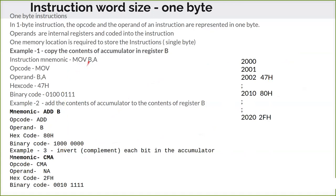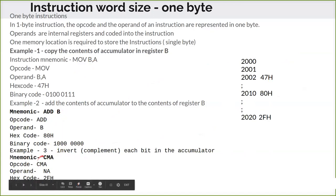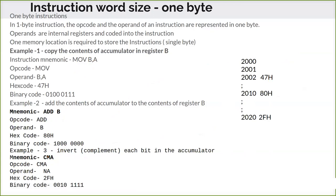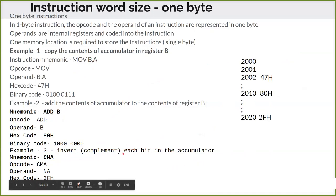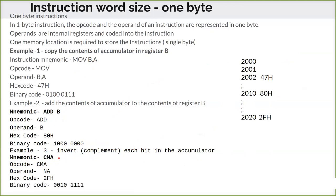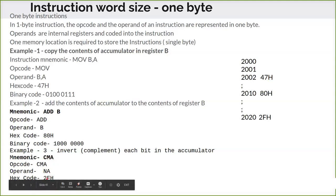Another example is 'CMA' — complement the value of the accumulator. That means if there is a one, it is converted to zero, and zero is converted to one, so every bit in the accumulator is inverted. Here also the operand — the accumulator — is not explicitly given; it is implied. If you want to complement register B, you have to move the value of B to the accumulator first and then issue CMA. CMA also has its fixed equivalent hex code and occupies only a single memory location.